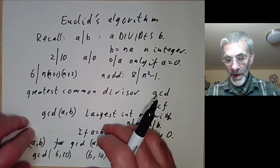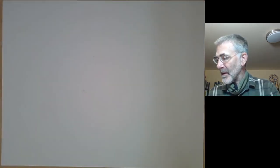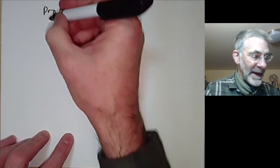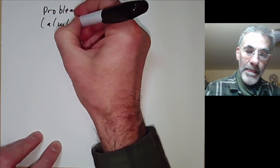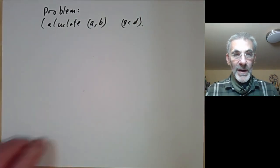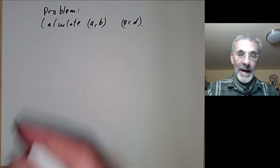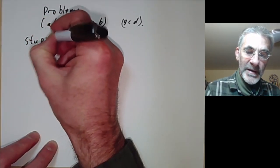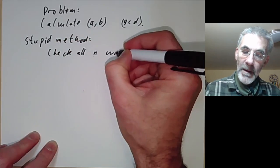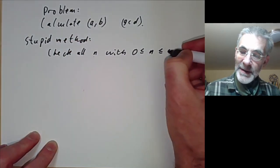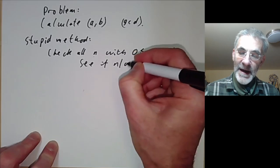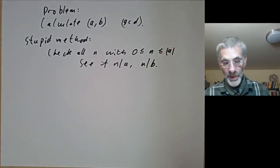We now come to the following problem: calculate the greatest common divisor of a and b. I'm going to give about four methods. Let's start with the stupid method, which is just to check all n with 0 ≤ n ≤ |a|, since the greatest common divisor must be in that range, and see if n divides both a and b, then pick the biggest one with those properties.